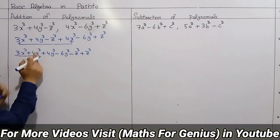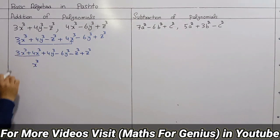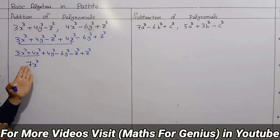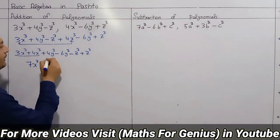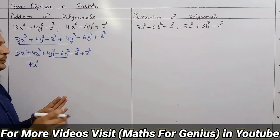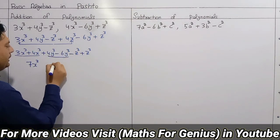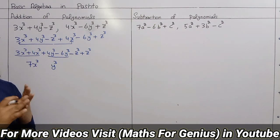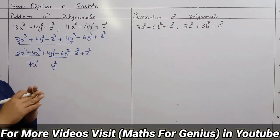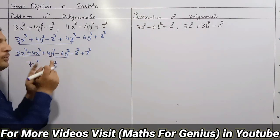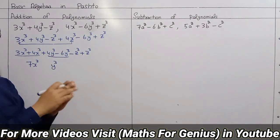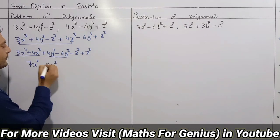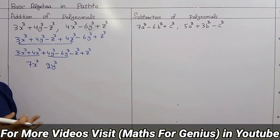The x cube coefficient is 4 and the x cube coefficient is 3. So 3 plus 4 is 7 — the x cube result is 7. The y cube coefficient is minus 6. If you want the x cube, then 4 minus 6 gives the result. The x cube will not change — coefficient 3.